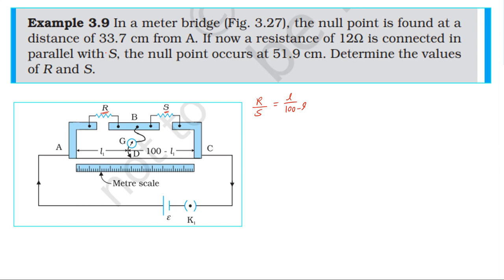First balancing length is 33.7. So R by S is equal to 33.7 divided by 100 minus 33.7, which gives R by S equal to 33.7 divided by 66.3.